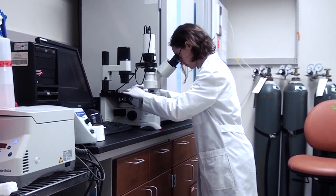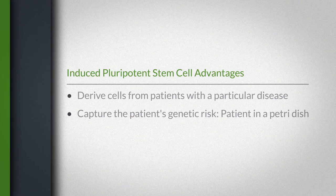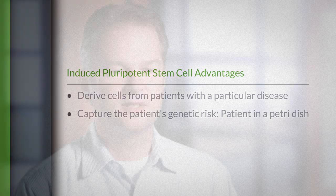The only platform I can think of to really address this question are stem cells — induced pluripotent stem cells in particular. The advantage of induced pluripotent stem cells is that you can derive these cells from your patients with a particular disease and then really capture all their genetic risk, essentially having the patient in a petri dish. You can study the disease in your lab, which I think is a very logical next step to functional studies and really understanding how genes work and how gene variation impacts disease.